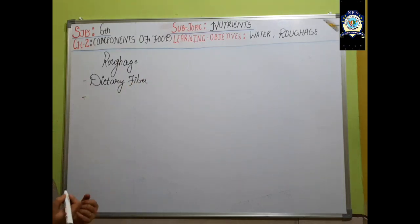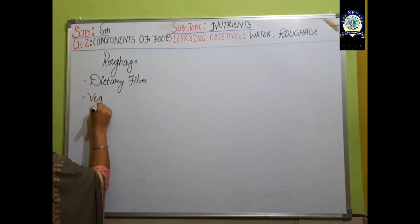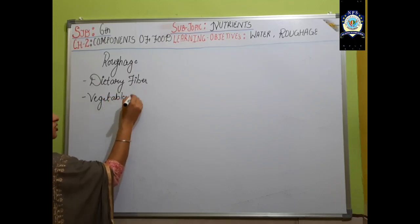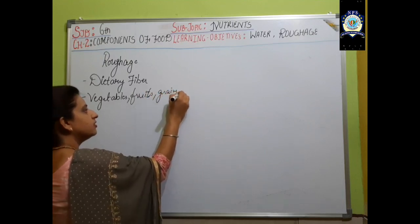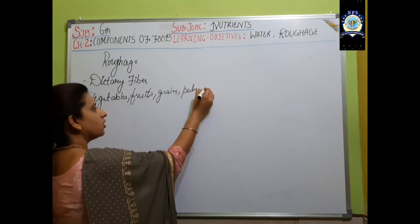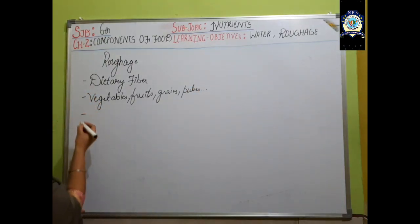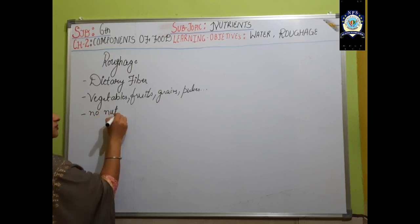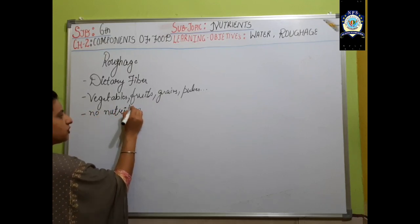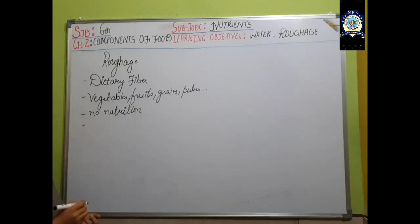Dietary fiber is provided to our body with the help of vegetables, fruits, grains, pulses, and many more. These dietary fibers or roughage do not provide any kind of nutritional value to our body, but they help in adding bulk to the food.